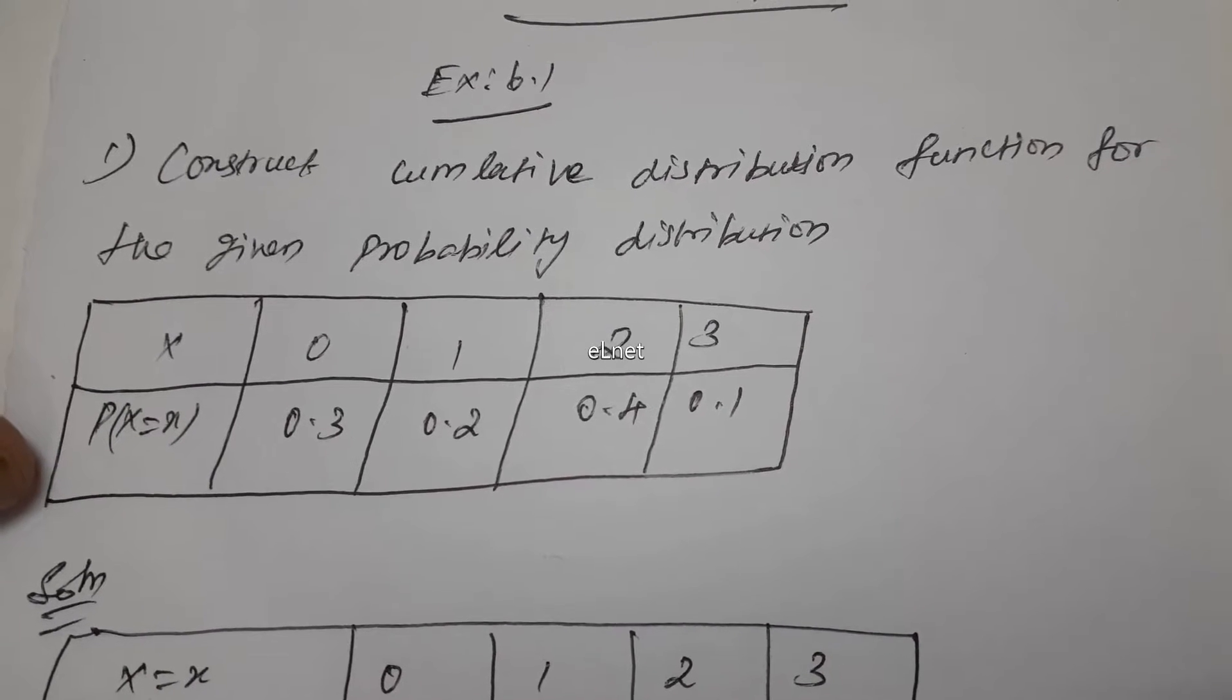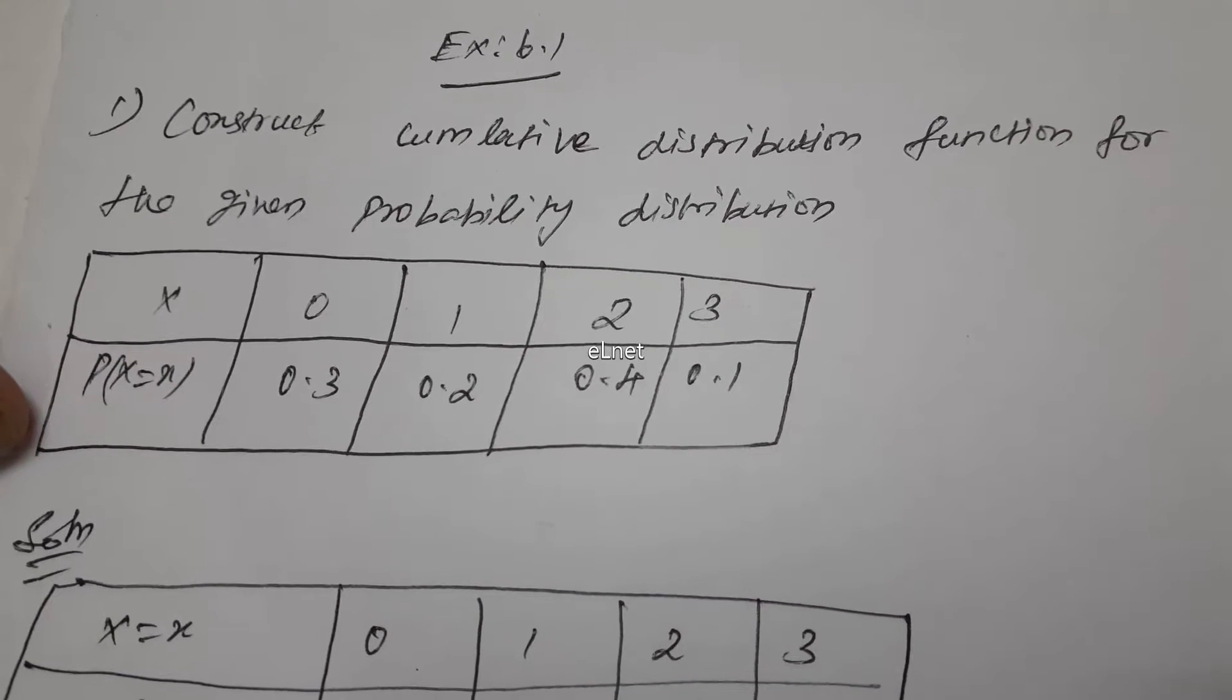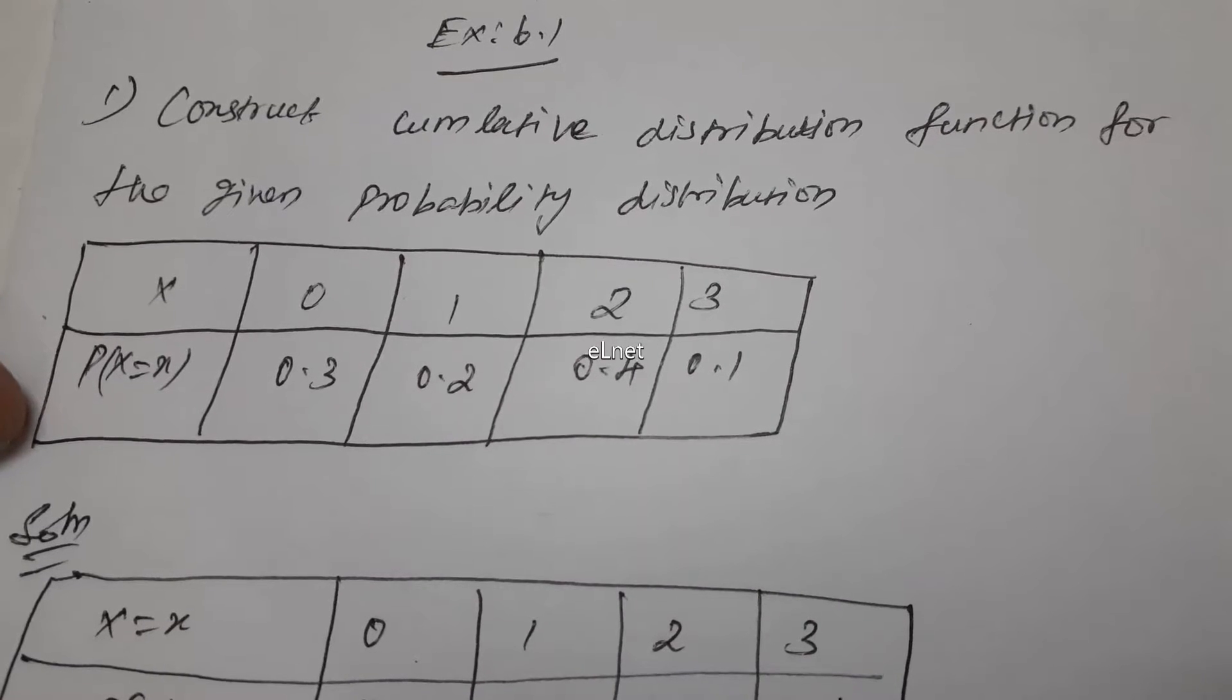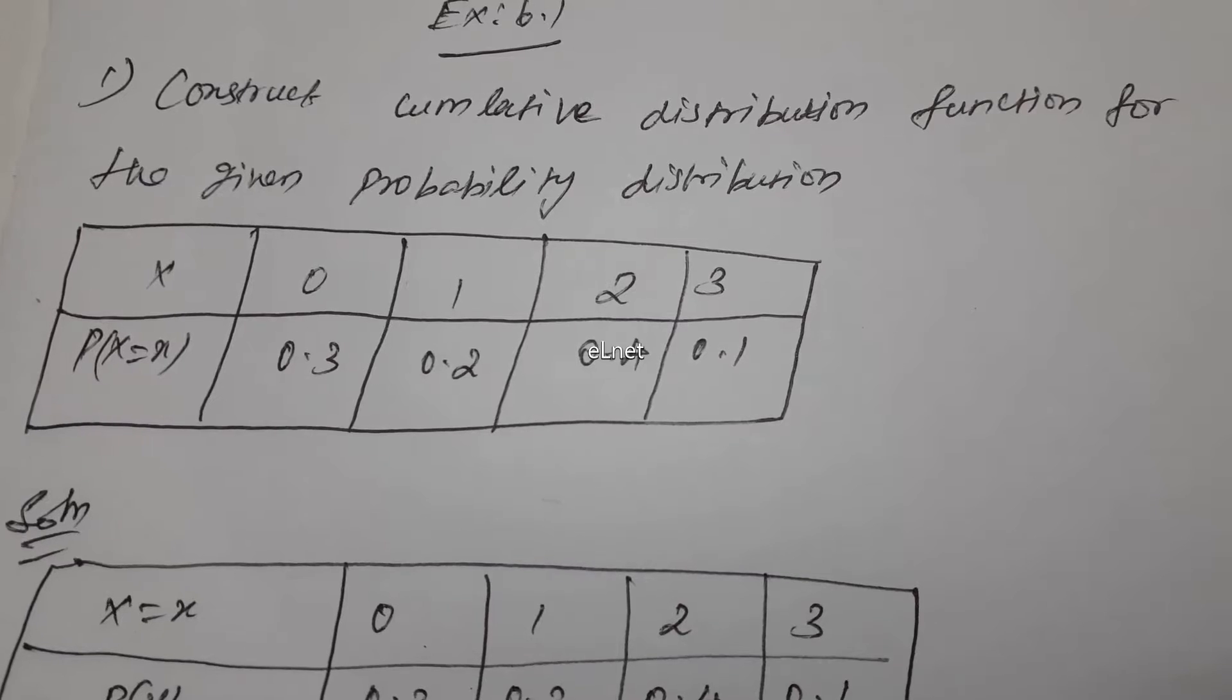Next is the probability density function. The integration from minus infinity to plus infinity of f(x) dx equals 1. That is the probability density function formula.